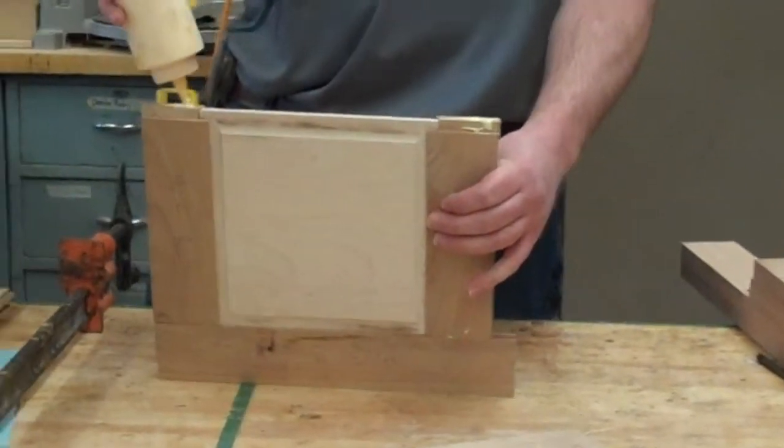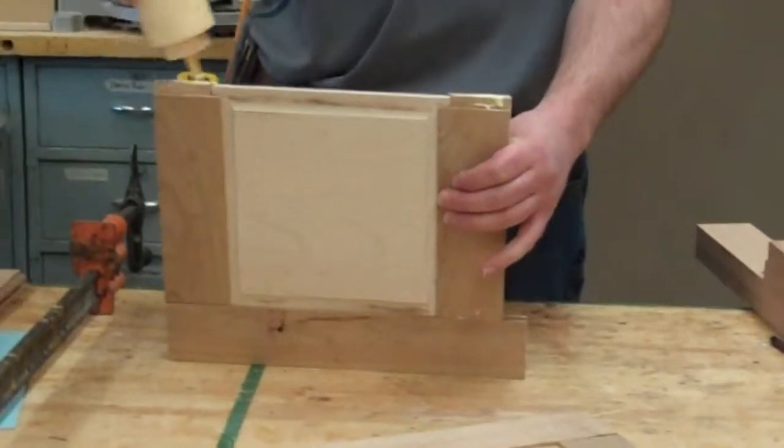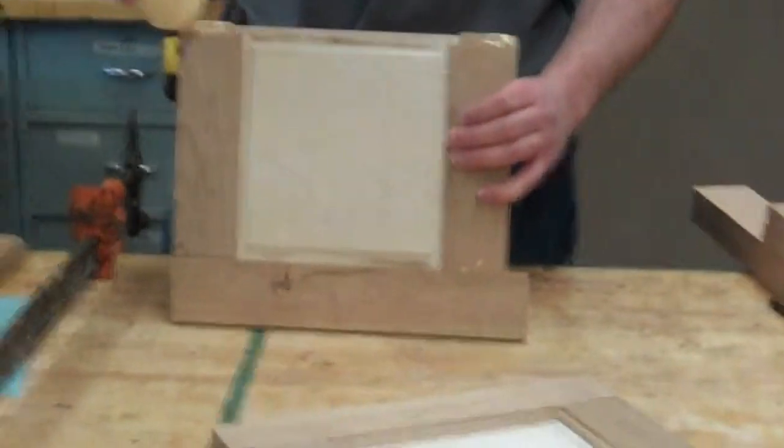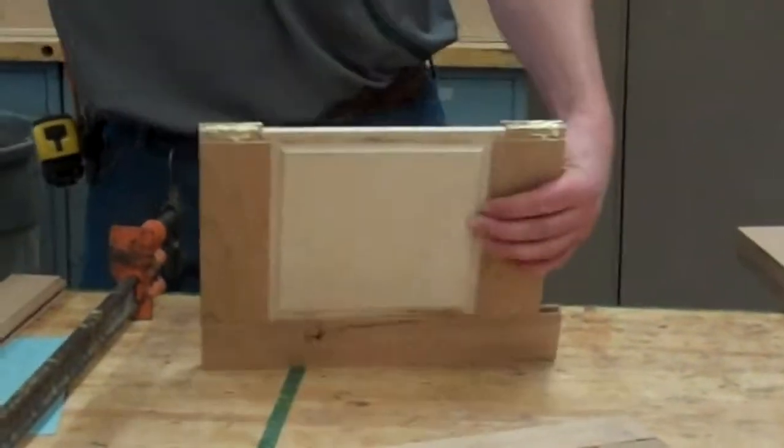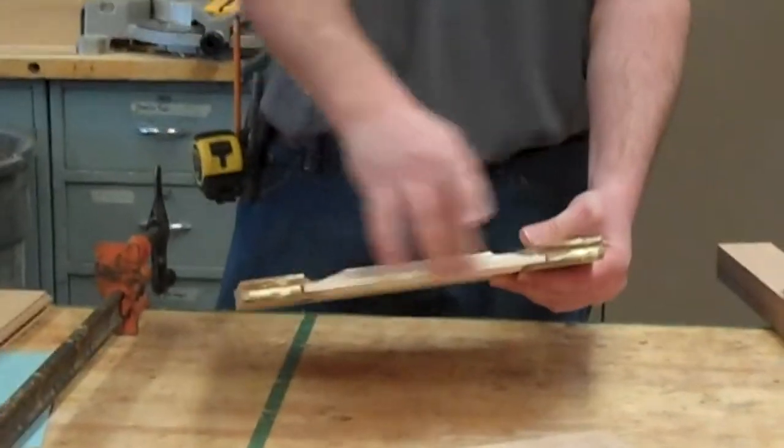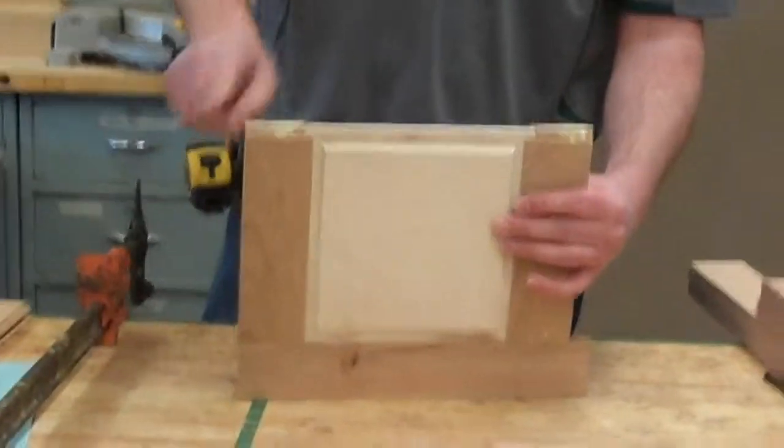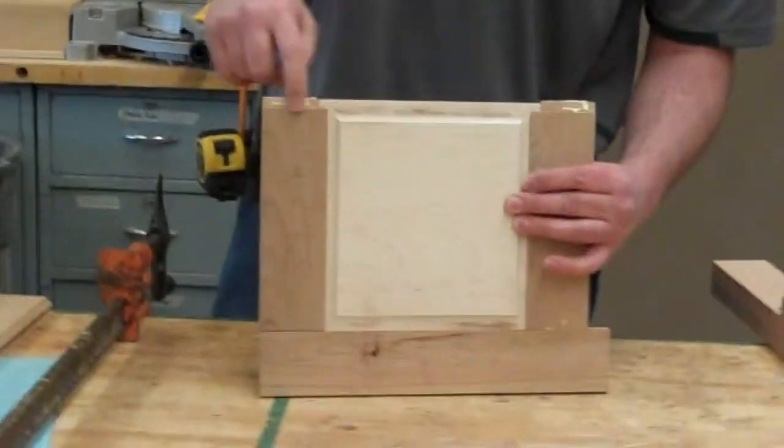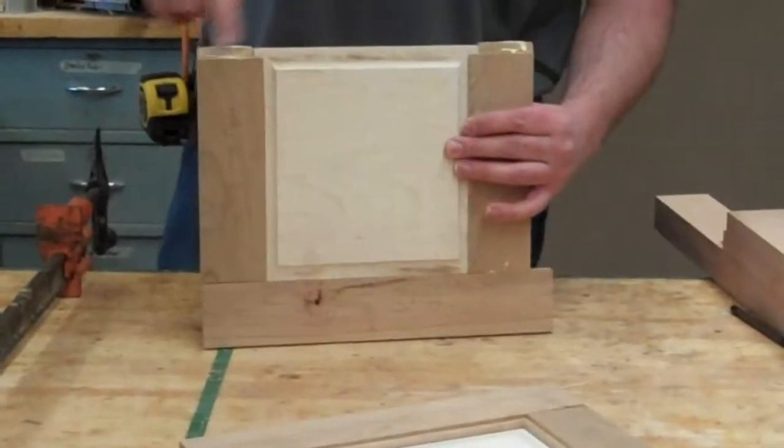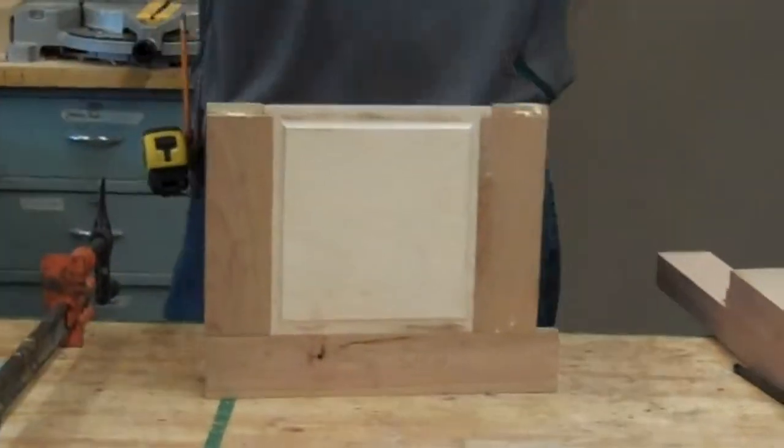Pop that style off. A little bit of glue. And again, I can't stress this enough. Do not glue your panel inside there. Let this thing just be dry. Nothing on the edge there. We want that to be able to move around if needed. Get our style back on.